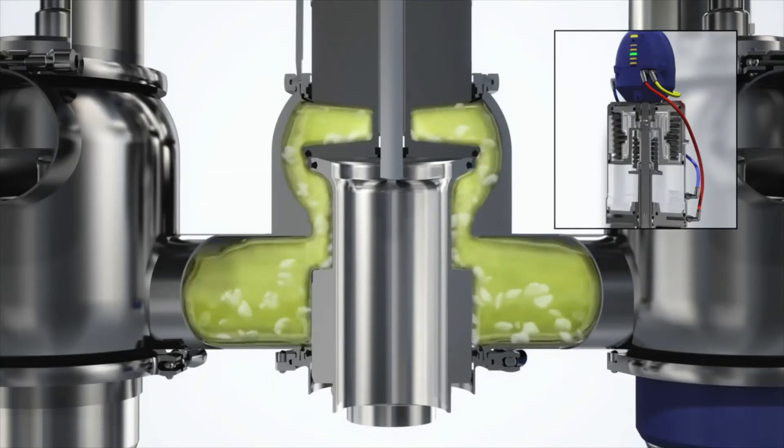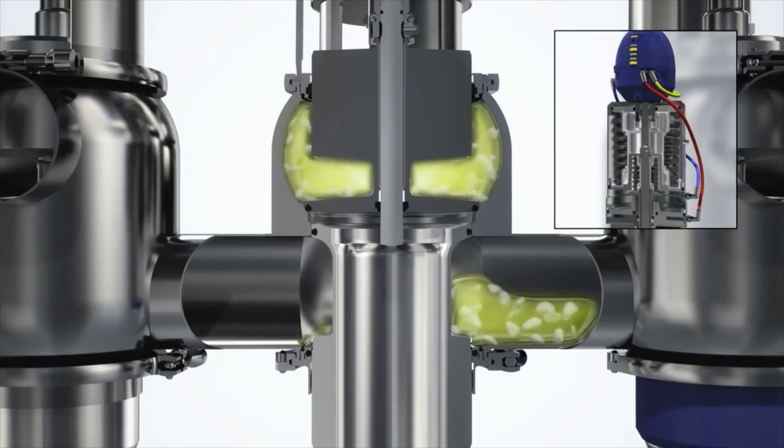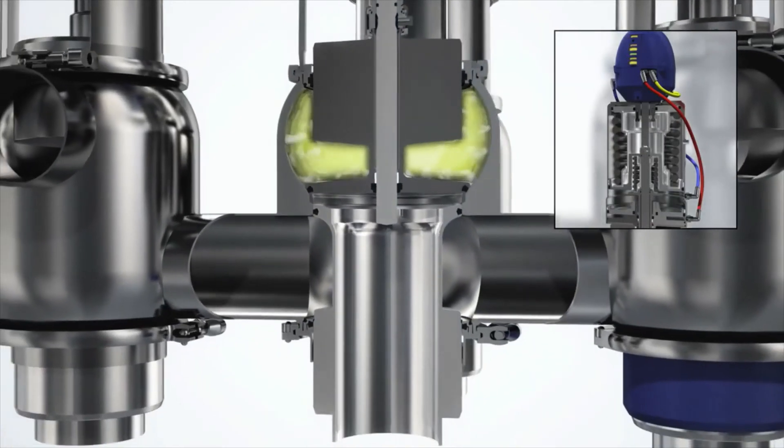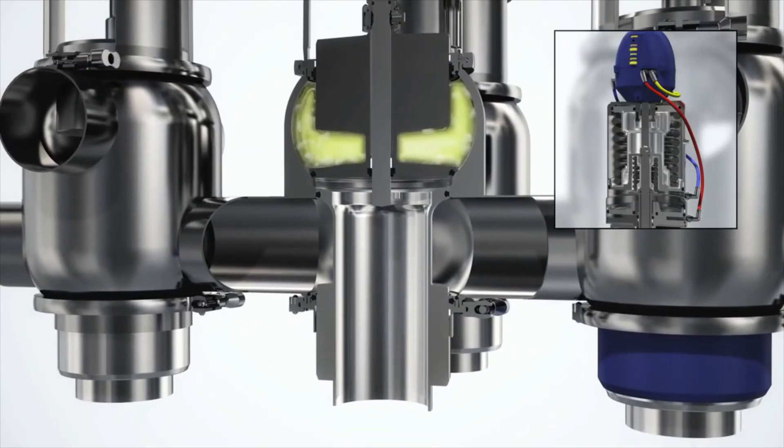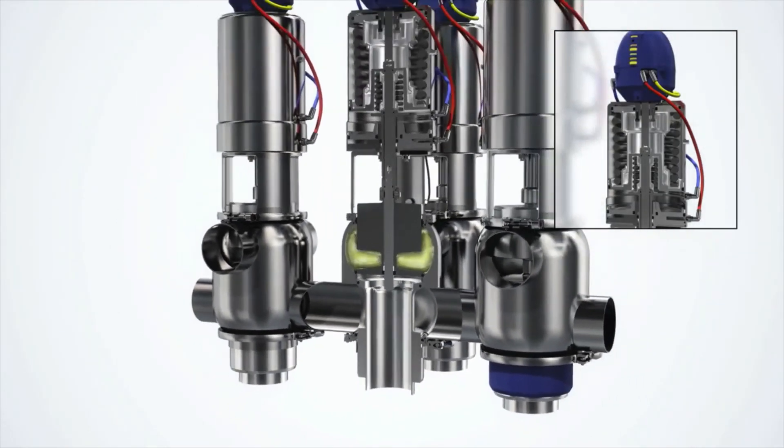Closing the valve also requires two steps. The actuator moves the upper plug into the axial seat. Then the lower plug, with its radial seal, is guided into position to provide long-lasting operation.